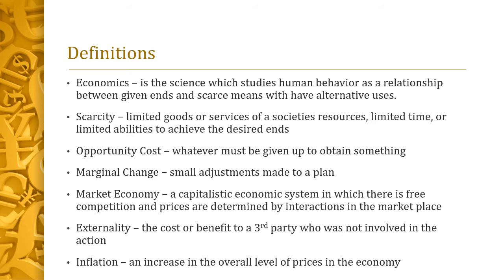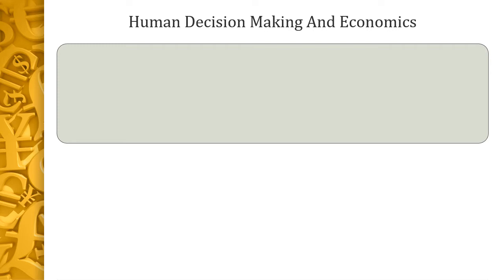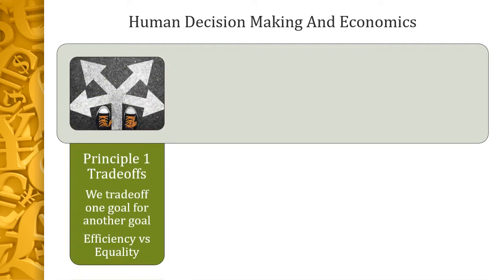Let's start looking at the ten principles. The first is that individuals make decisions and those decisions affect the economy — we're really looking at the concept of trade-off. It would be nice if we could have everything at once, but since we can't, we have to trade off one thing we want for something else. Right now you're trading off your time listening to this lecture rather than playing, cooking, or watching something else. Time is a scarce resource and you have to make trade-offs.